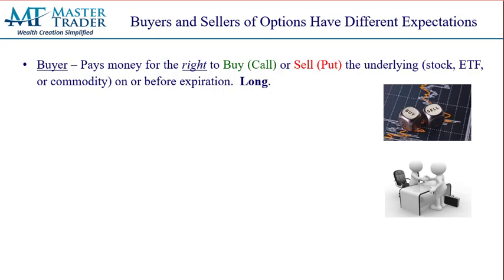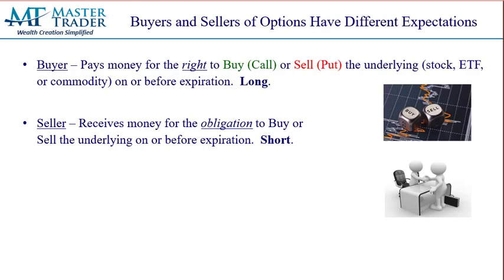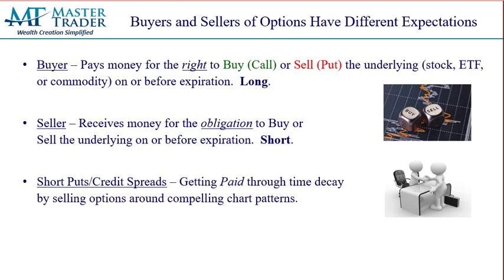Buyers of call or put options are paying money, and that gives them the right to either buy or sell the underlying on or before a certain expiration date. The seller — which is what we're going to focus on in this video — receives that money, and we have an obligation to buy the underlying if we're selling a put, or to sell the underlying if we're selling a call. We use our chart analysis and MasterTrader approach where we think that money is going to expire worthless — we're taking the other side of the bet of the option buyer. When we're shorting credit spreads or even naked options, we're literally getting paid the premium by selling those options. We profit through time decay, volatility contraction, and also as the stock moves in the intended direction.